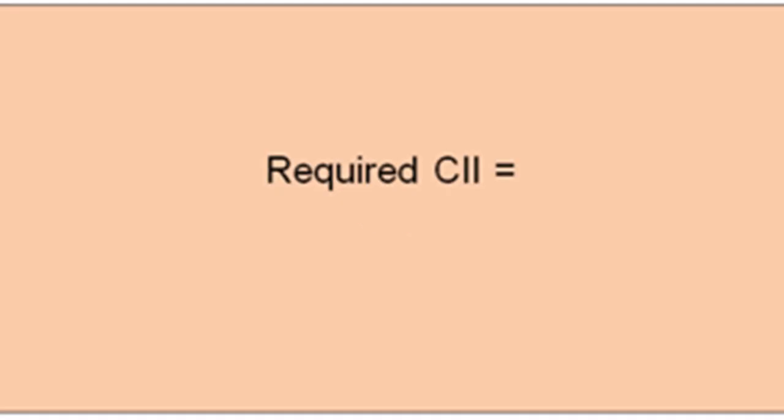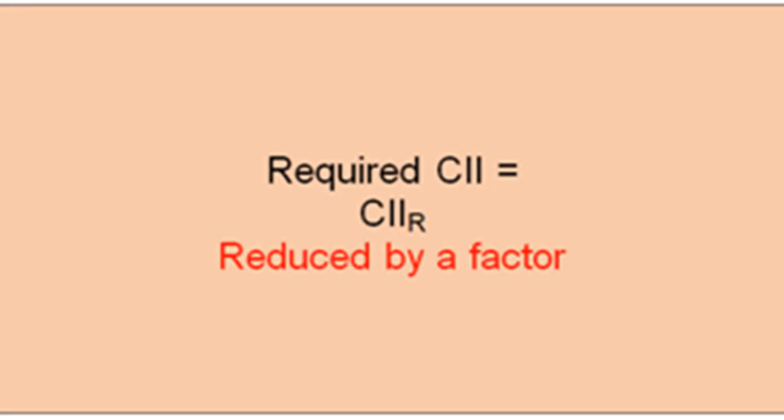On the same line as required EEDI and required EEXI, there is something called required CII. Required CII is found from the reference CII in the table, and we apply a reduction factor. SFC — Specific Fuel Consumption — is a term seen in many technical documents related to energy efficiency. It is the consumption of fuel per unit power output.